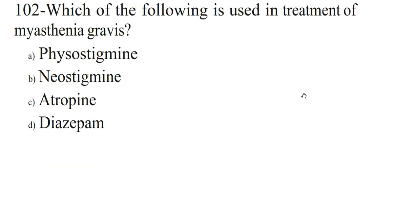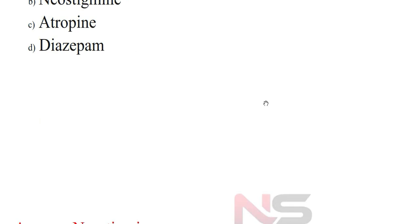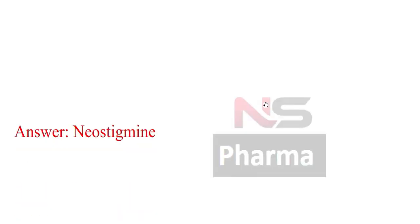Next question. Which of the following is used in treatment of Myasthenia gravis? Option A. Physostigmine. Option B. Neostigmine. Option C. Atropine. Option D. Diazepam. Answer: Neostigmine.